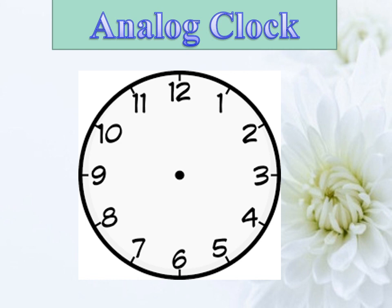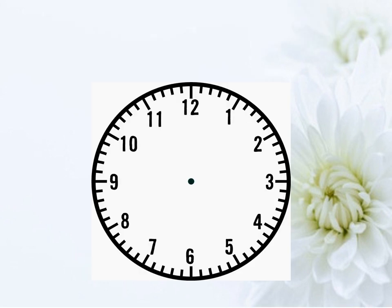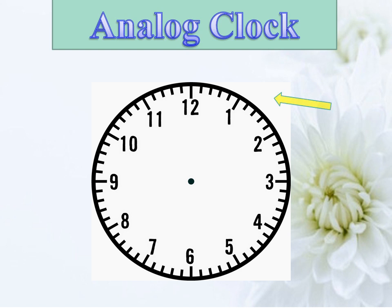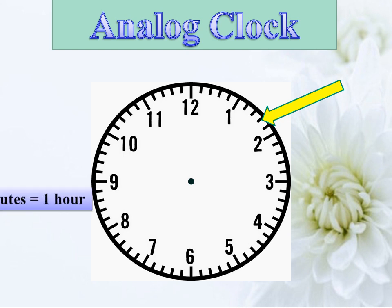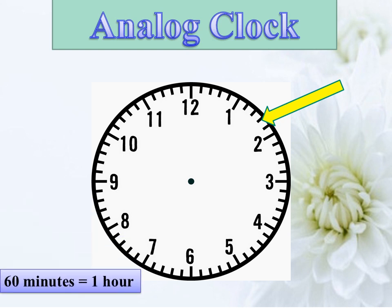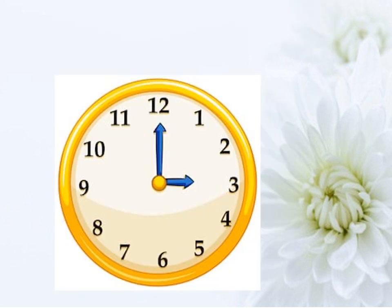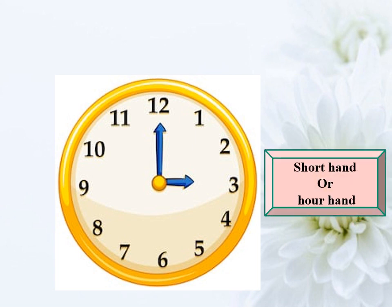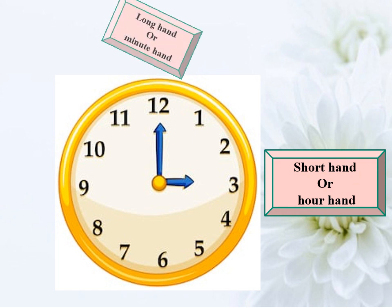There are 12 hours marked on the clock. The lines around it mark the minutes — there are 60 minutes marked on the clock, because there are 60 minutes in one hour. The short hand points to the hours, so it is called the hour hand. The big hand points to the minutes, so it is called the minute hand.